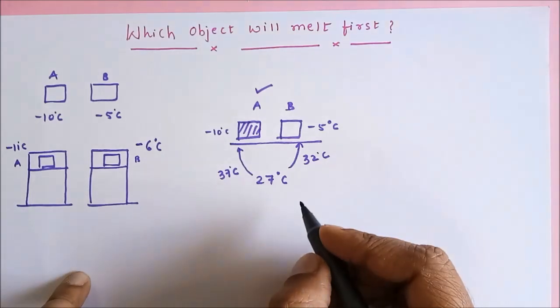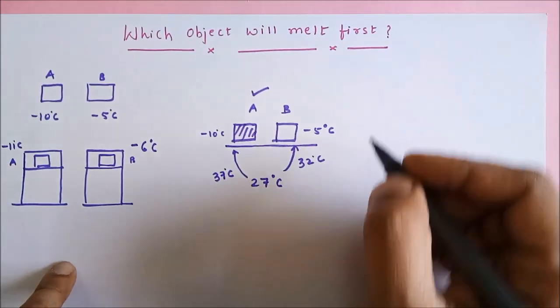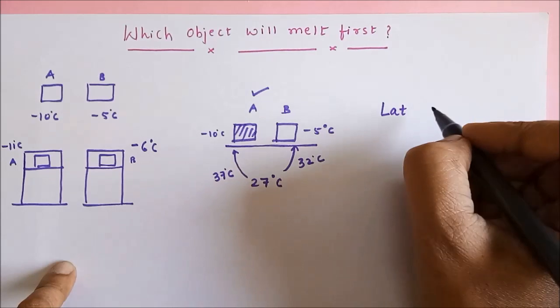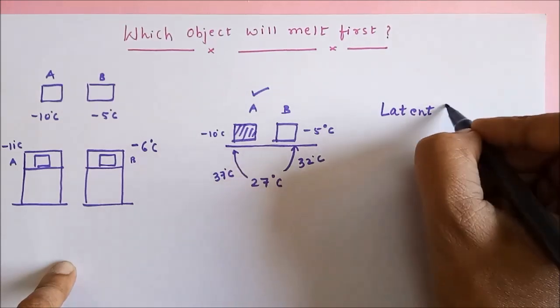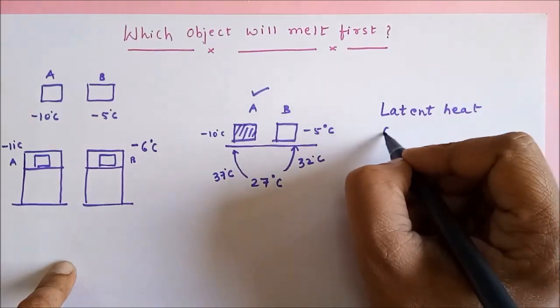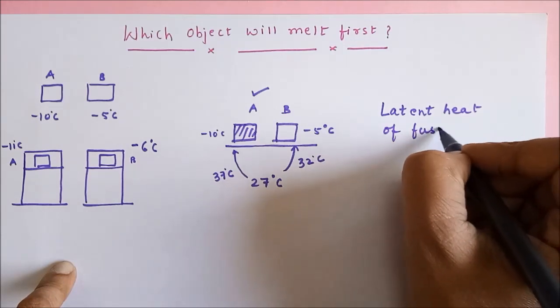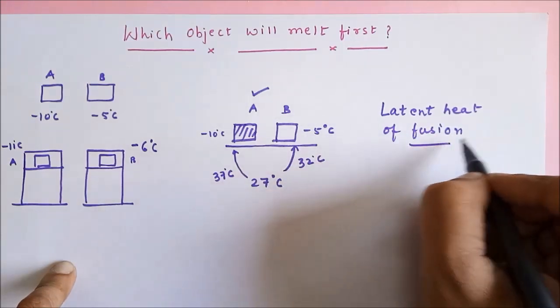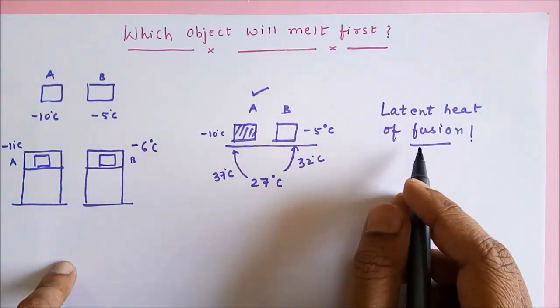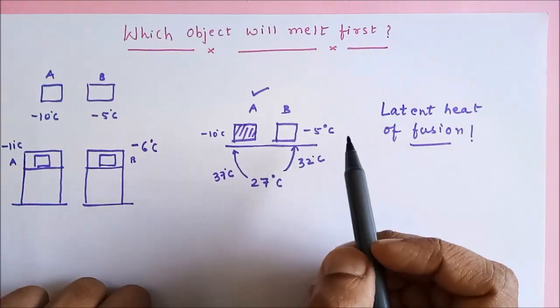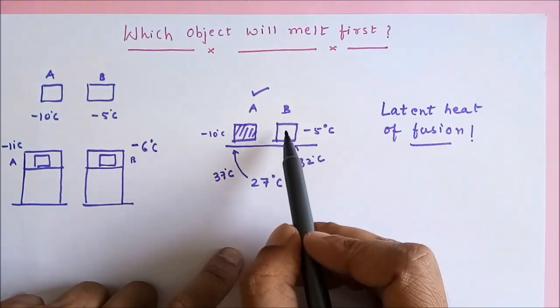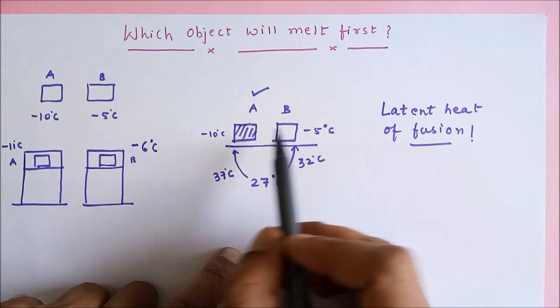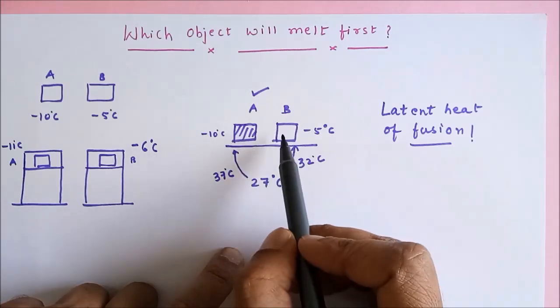We also cannot ignore the fact about latent heat of fusion. It might be possible that A and B do not have the same latent heat of fusion.